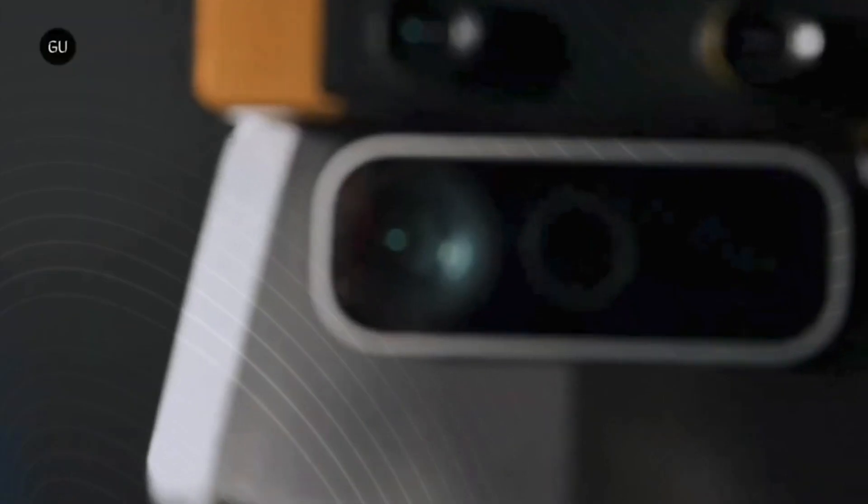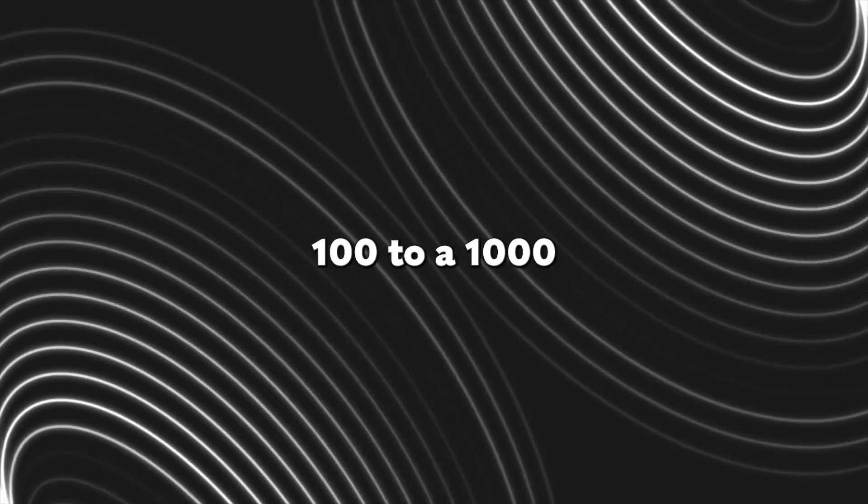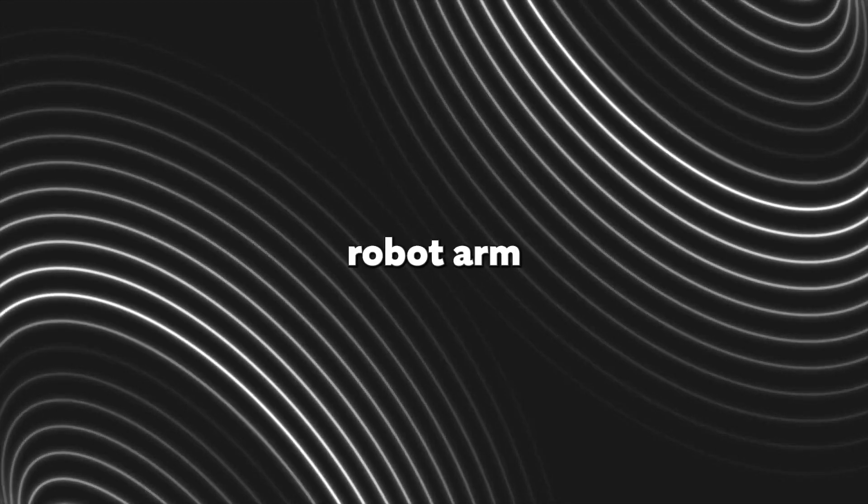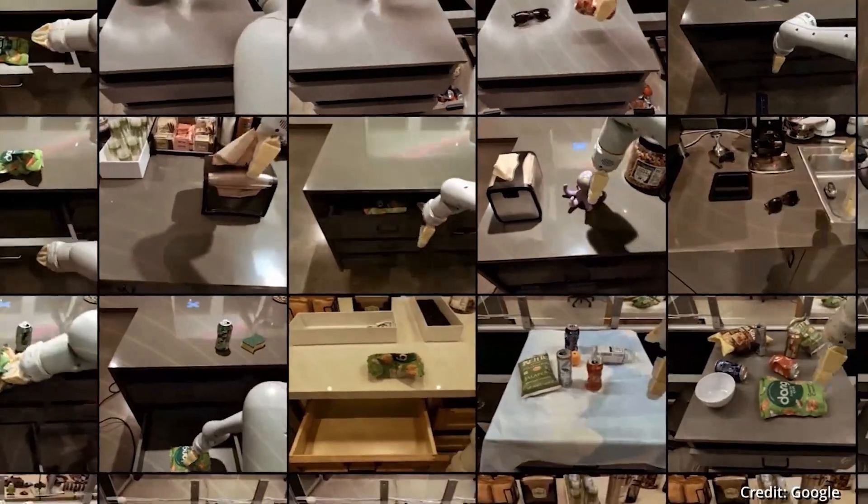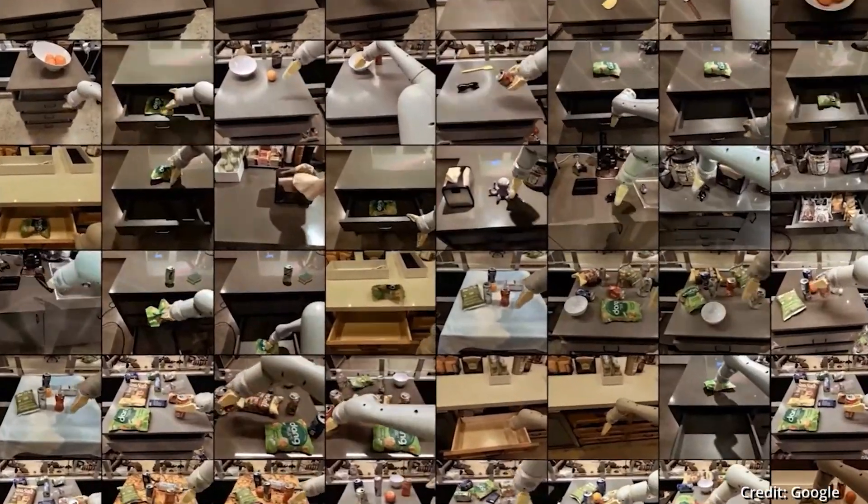Training RoboCat took place in five steps. 100 to 1,000 demonstrations were collected using a human controlling a robot arm. Then RoboCat would be fine-tuned on this arm, which would make a new spin-off agent in the process.